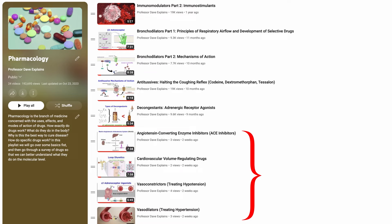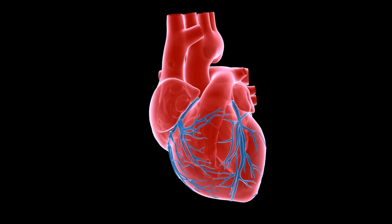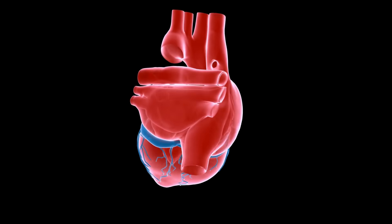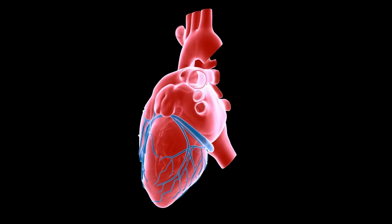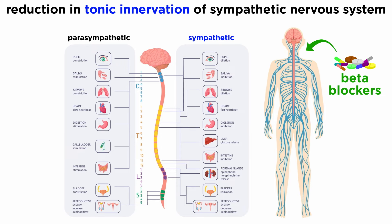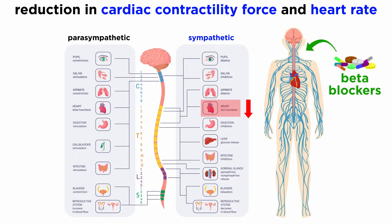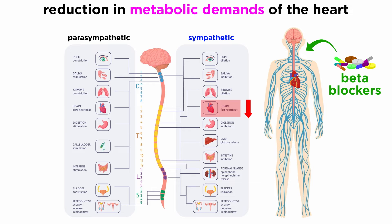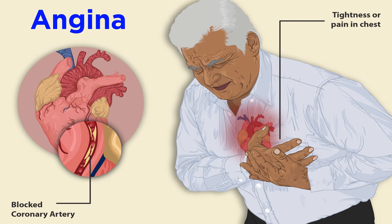For more information on diuretics and antihypertensives, please check out the previous tutorials on these drugs. Relevant to this tutorial, beta blockers are also an important tool in managing long-term heart failure. By reducing the tonic innervation of the sympathetic nervous system, beta blockers reduce the often upregulated sympathetic innervation of the heart, leading to reduced cardiac contractility force and overall heart rate. Critically, this translates to reduced metabolic demands of the heart, aiding the treatment of vasodilator drugs in treating angina as well as chronic heart failure.